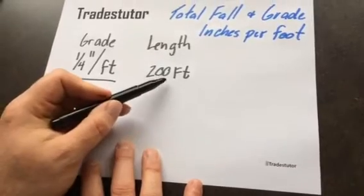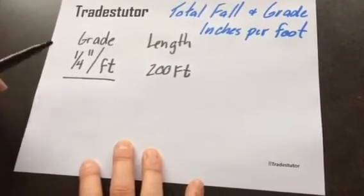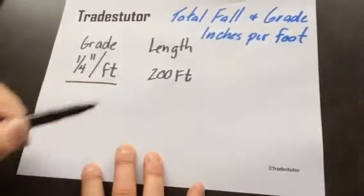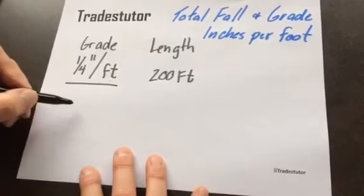So for 200 feet of pipe, it's going to fall one quarter inch per foot. So for every foot that it goes in that 200 feet, you're going to fall a quarter inch. The formula we use to calculate this is total fall equals length times grade.